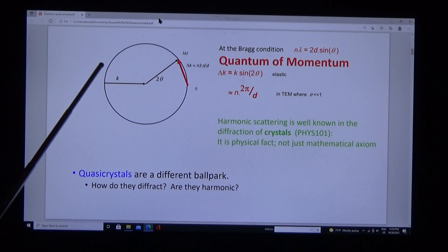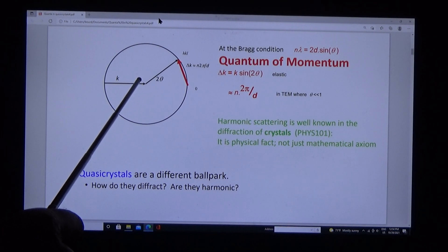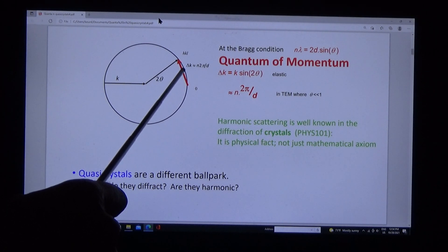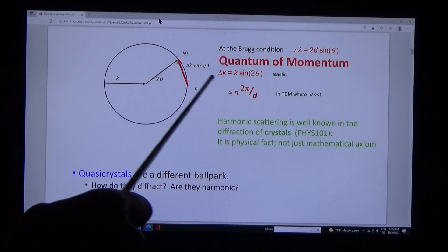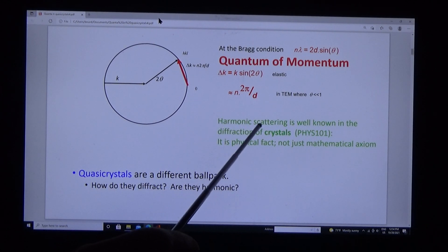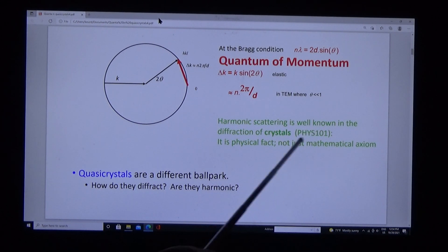Here's a representation of the momentum. Quantum K is the wave vector of the incident probe. The scattering is elastic and the quantum is represented by this red arrow, algebraically by 2π over d. Harmonic scattering is well known in the diffraction of crystals. It's a physical fact, not just a mathematical axiom.